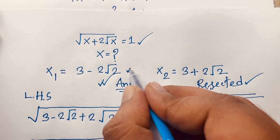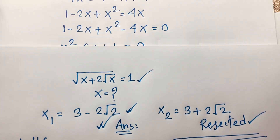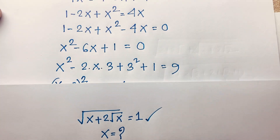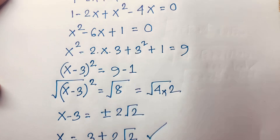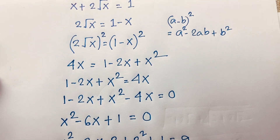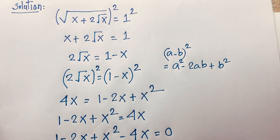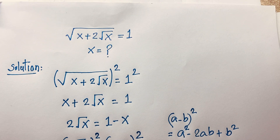Our real solution is x equals 3 minus 2 square root 2. This is the value of x in this square root math problem. Thank you all. If you enjoyed this video, please subscribe to our channel for other interesting videos. Goodbye, take care.